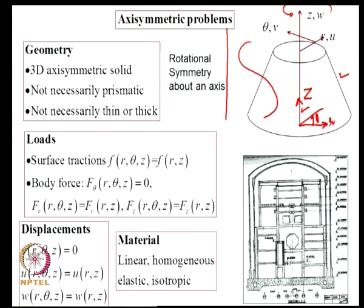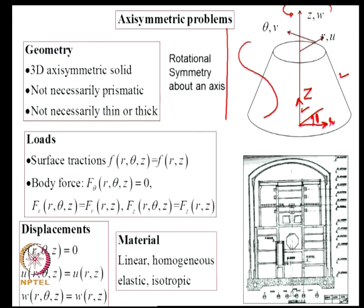Using symmetry of geometry, loading, and boundary conditions, the displacement fields are: U along R, V along theta, W along Z. Due to axisymmetry, V = 0, and both U and W are independent of theta. The material is linear, homogeneous, elastic, and isotropic. In the next class, we will develop a finite element model for problems satisfying these requirements — providing another 2D approximation.